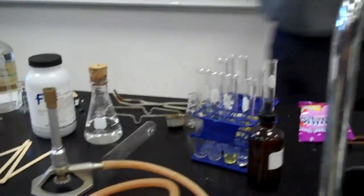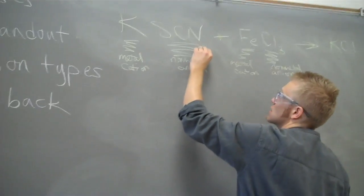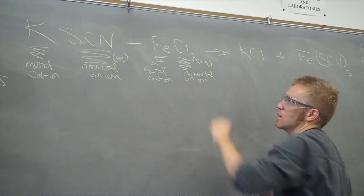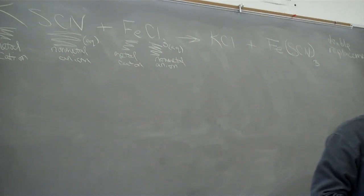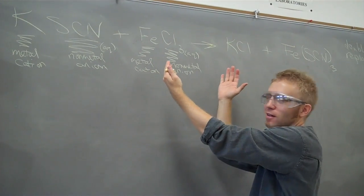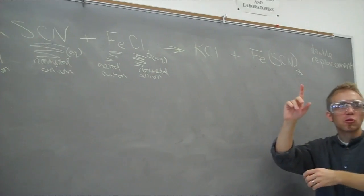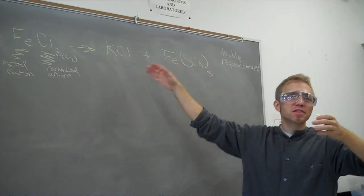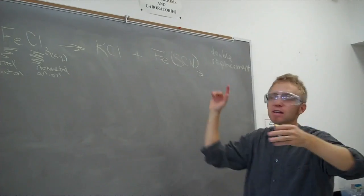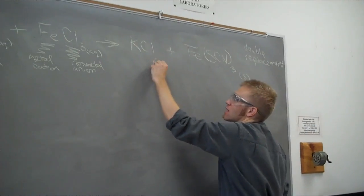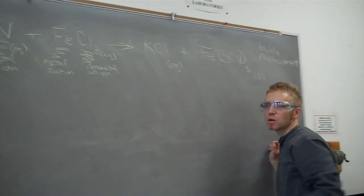Also notice that for every one of the double displacement reactions, AQ is used to describe the couples before they go to the party. For every one of the double replacement reactions, one of the couples leaves the party as a solid, and the other stays at the party aqueous — AQ.